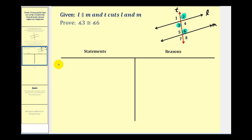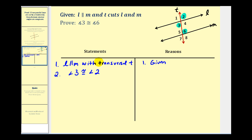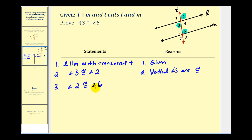Let's start by stating the given information: L is parallel to M with transversal T, and this was given. Next, we state that angle three is congruent to angle two because they are vertical angles. We also know that angle two is congruent to angle six by the corresponding angle postulate — that is, if two parallel lines are cut by a transversal, corresponding angles are congruent.